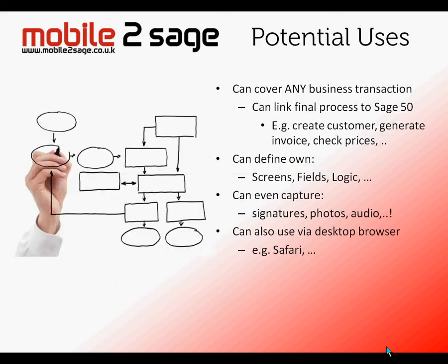What about potential uses? This can cover any business transaction, and what we can do is link parts of that transaction to your back office system. Sage 50 could be updated with creating a new customer, generating a new invoice, checking prices, or whether the customer's on hold — all of those things. You can define your own screens, your own fields, your own logic. You can even capture things like signatures, photos, and audio files. And having set it up, you can also access it from your desktop browser using something like Safari — anything that uses HTML5.